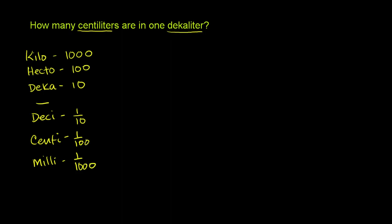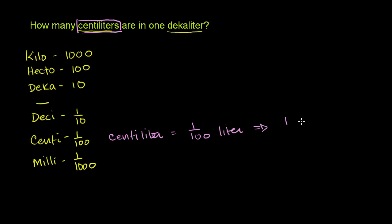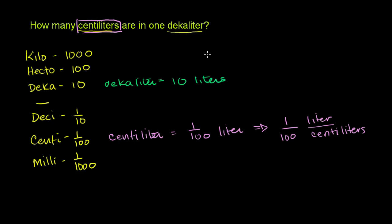So let's go back to what we have. We have centiliters — centi is right here. A centiliter is equal to 1 hundredth of a liter, or you could say 1 liter for every 100 centiliters. Now let's think about the decaliter. A decaliter means 10 liters, or for every 10 liters you will have 1 decaliter.